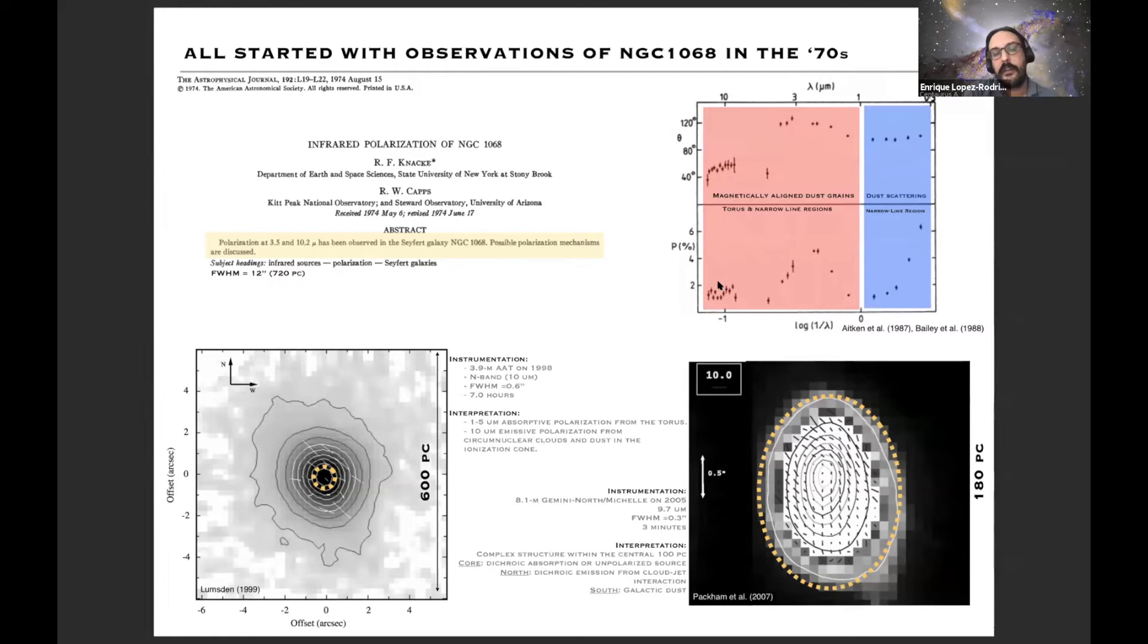Then you have the mid-infrared where in the case of the late 90s or early 2000s we didn't have enough spatial resolution to resolve the torus, but it's already giving a hint that the mid-infrared is coming from directly heated dust radiated directly from the central AGN.